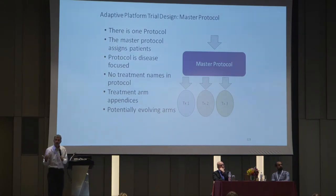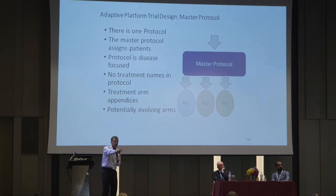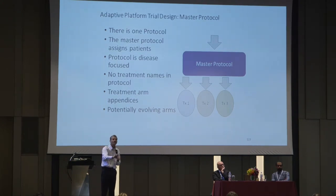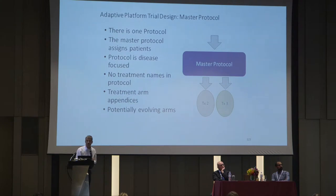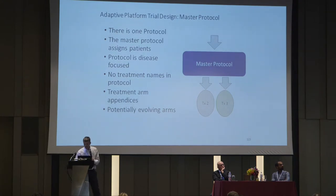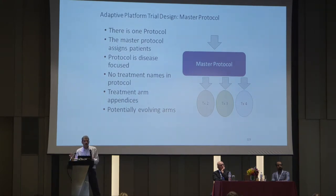There's one protocol with multiple arms, written in a modular fashion. The protocol exists with no drug names in it — it describes what happens to patients, what the endpoints are, what the visit schedules are, and how we randomize them to agents. The drugs are plug-and-play as appendices to the master protocol. As the trial evolves, treatment one may leave if it's not effective, and we add treatment four in the middle of the trial. This is the exact same protocol, and it evolves potentially as long as the need exists.